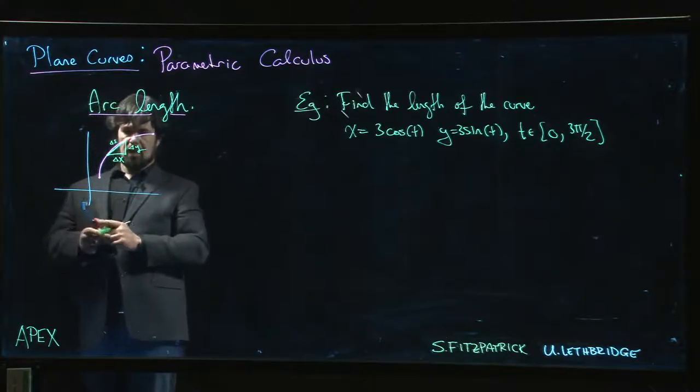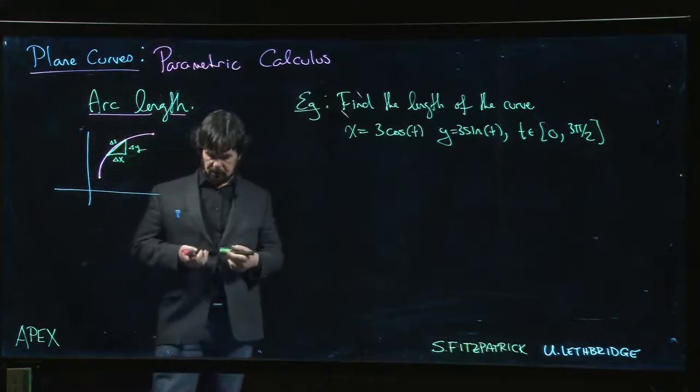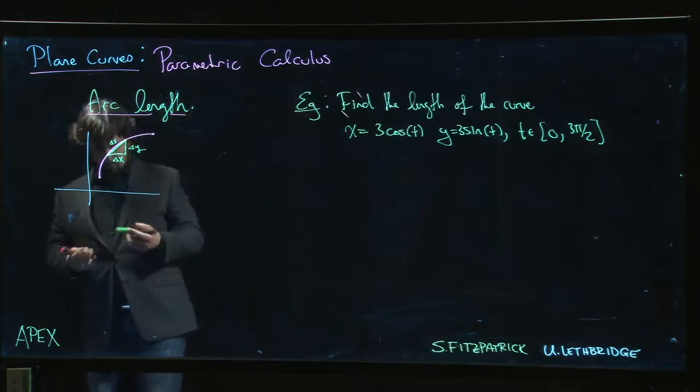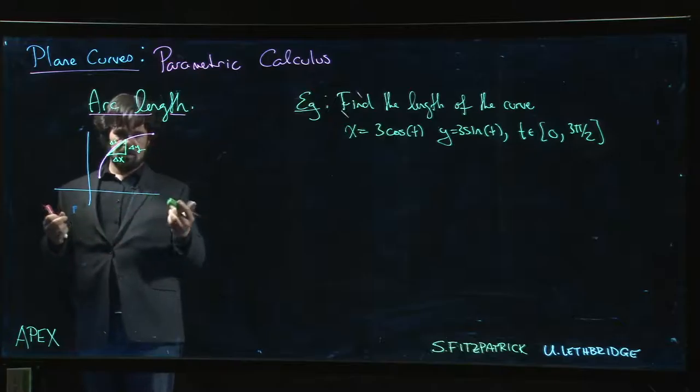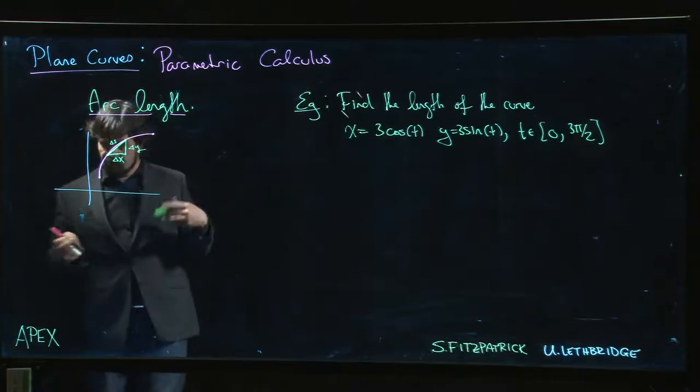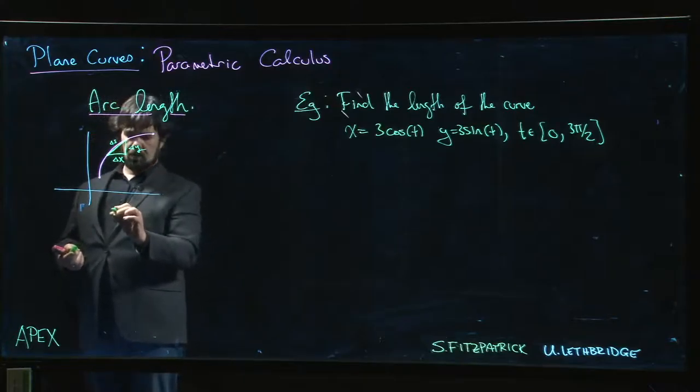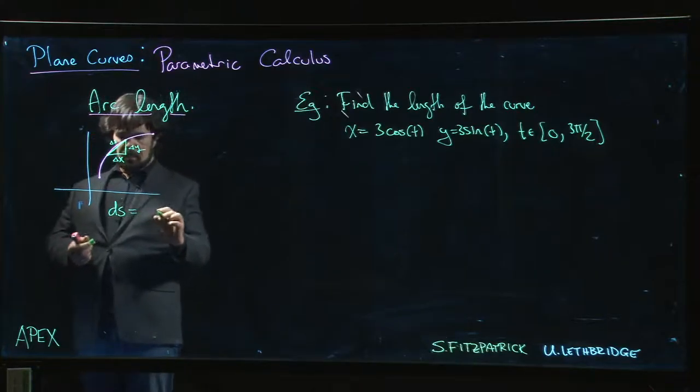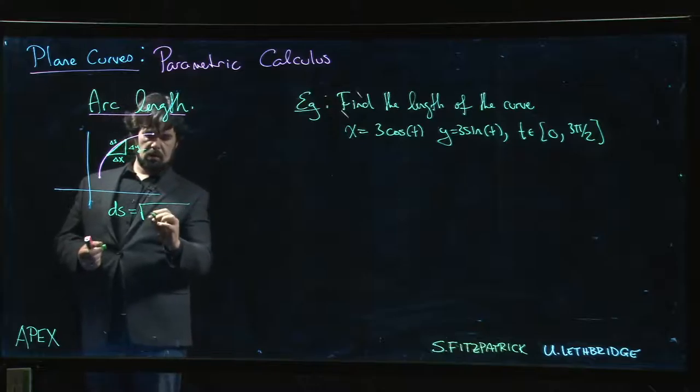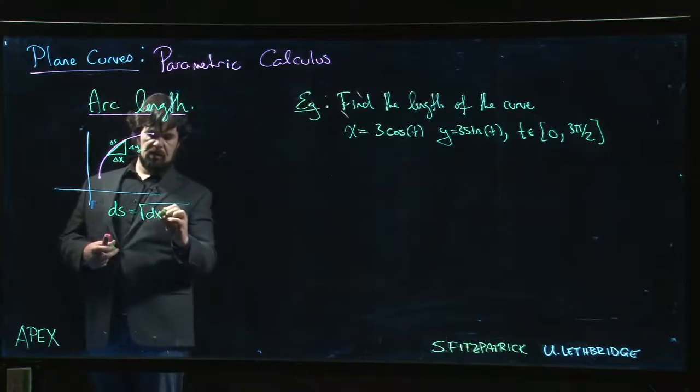So we have delta s on this side, delta y on that side, delta x on that side, and we get the obvious relationship from the Pythagorean theorem. And so we kind of let the deltas go to d's because we're taking the limit of Riemann sums and we get this infinitesimal arc length element.